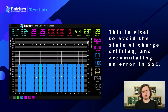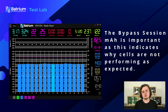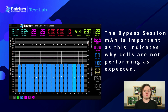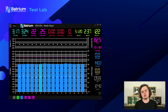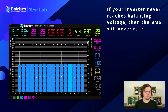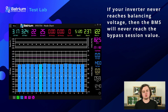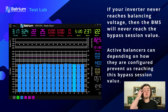Something we feel is missed by many is the bypass session milliamp hours. It's important because you can watch that value and it points to certain cells having to do a whole bunch of balancing to make up for errors in other cells. We'll be doing more videos showing how this reading helps monitor battery pack health and how we'll be putting it into our insight system. If your inverter never reaches balancing voltage the BMS will never reach the bypass session value, so make sure that target lines up. Also make sure active balancers aren't preventing us from reaching this bypass session value.